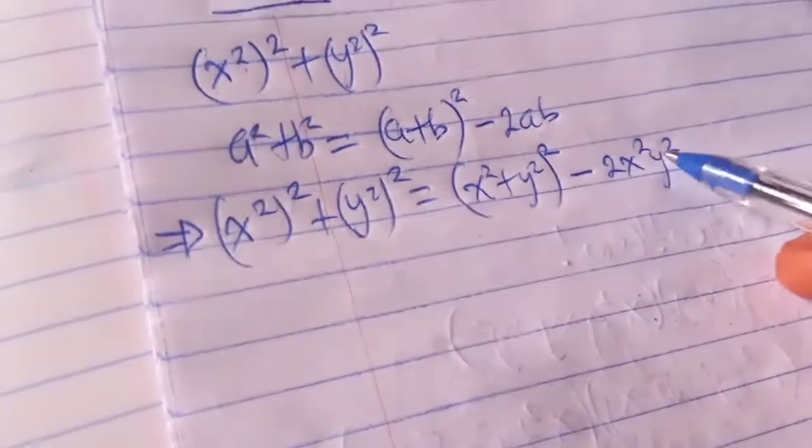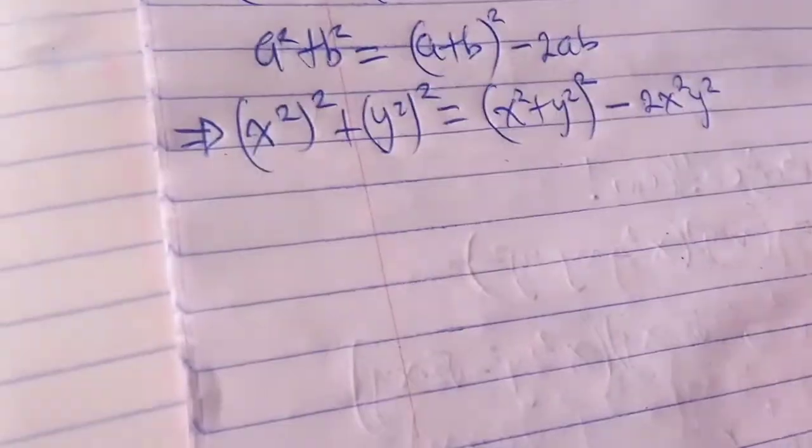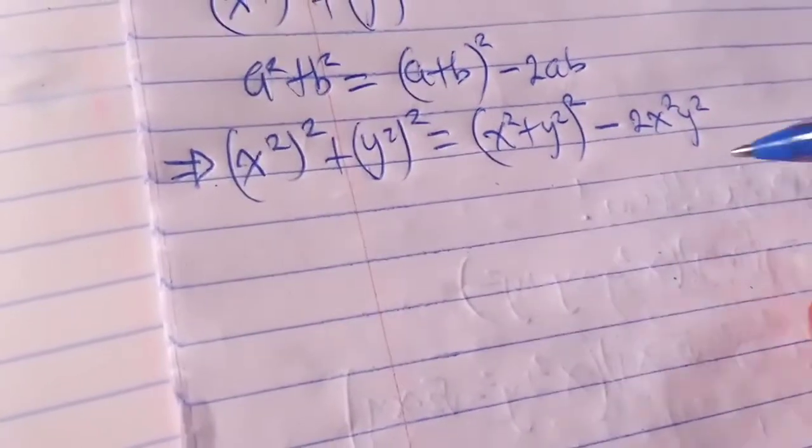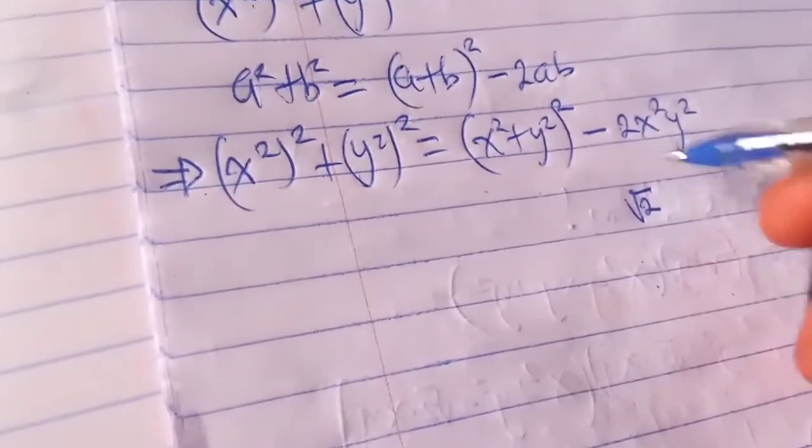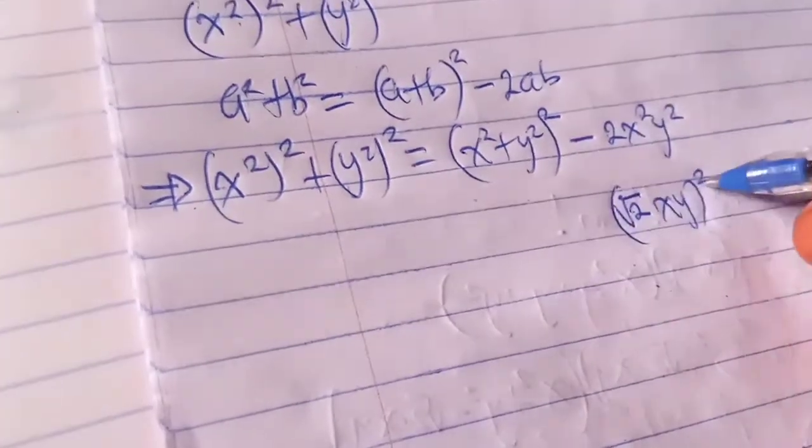So everything here is a perfect square apart from the 2. We can still make the 2 a perfect square by taking the square root of it and squaring it. So I'm going to write that as square root of 2, and I square it.